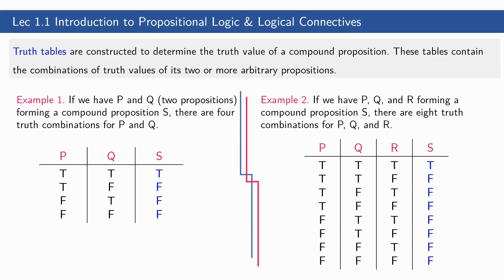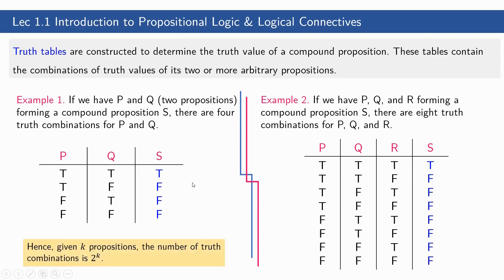The purpose is to investigate whether the entire compound proposition S is valid or not. In general, given K propositions, the number of truth combinations is 2 raised to K. So if we have five propositions, we will have 2 raised to 5, which equals 32 truth combinations — hence 32 rows in our truth table.